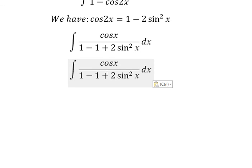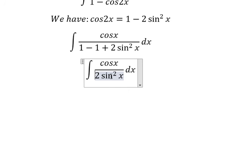1 minus 1 you cancel, and now we just have 2 sine squared x.